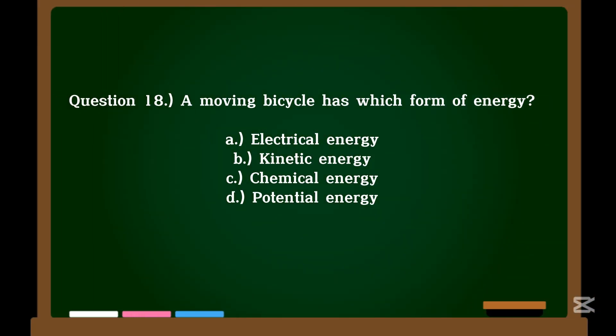Question 18. A moving bicycle has which form of energy? A. Electrical energy. B. Kinetic energy. C. Chemical energy. D. Potential energy.